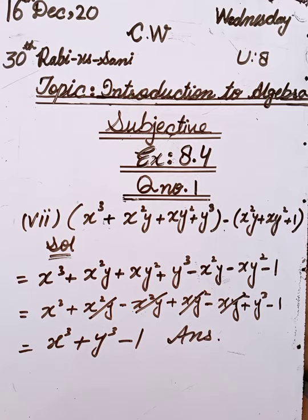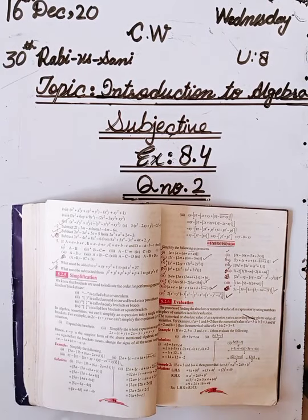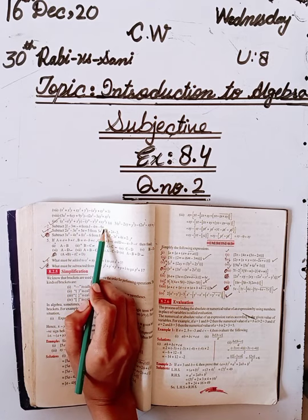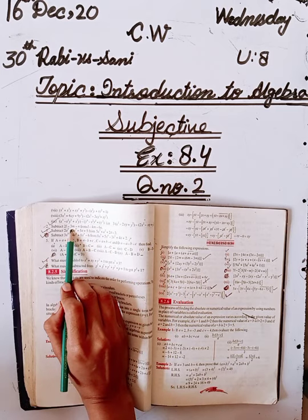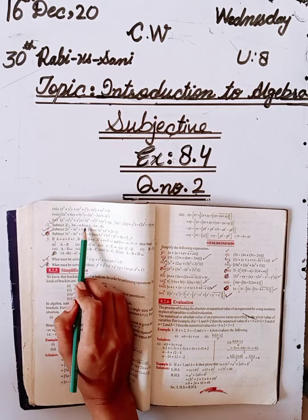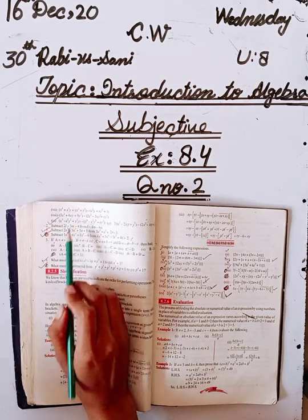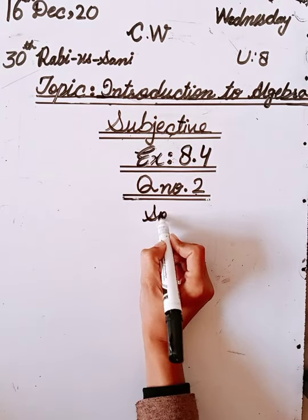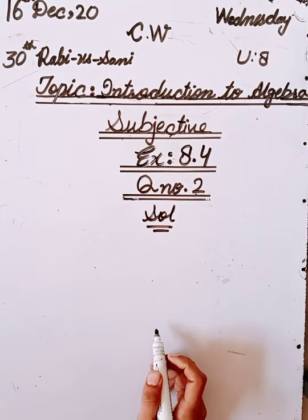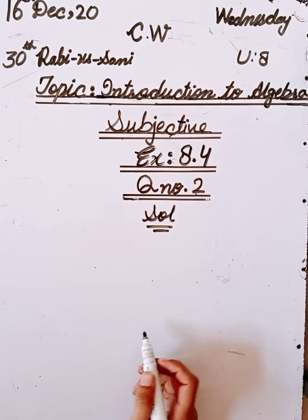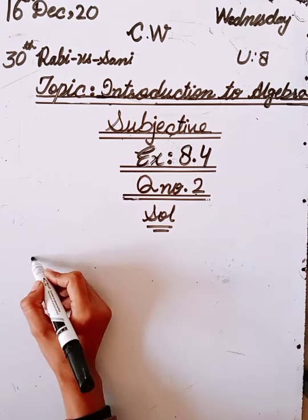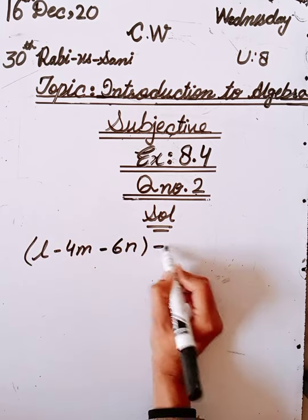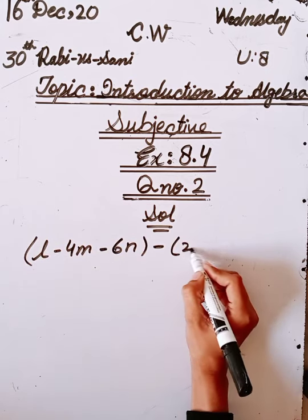Question number two: subtract (2l - 3m - n) from (l - 4m - 6n). Students, we will subtract. We start with the second value minus the first value. You can do it horizontally or vertically. We have to subtract 2l minus 3m minus n from l minus 4m minus 6n.